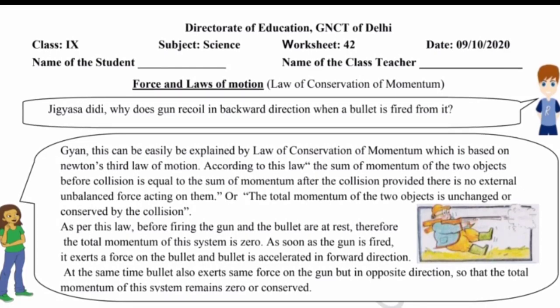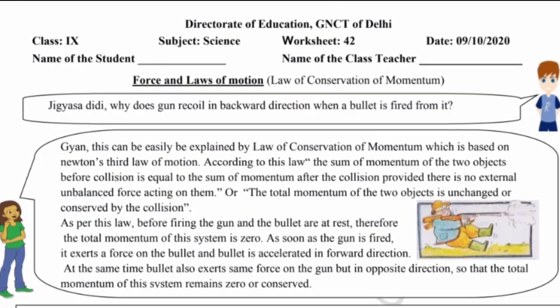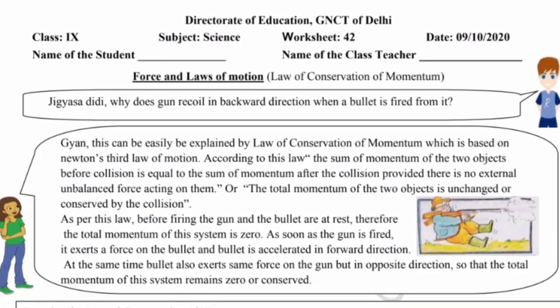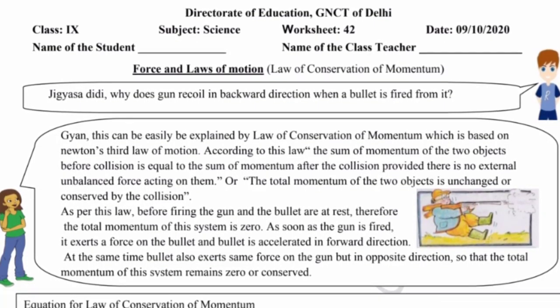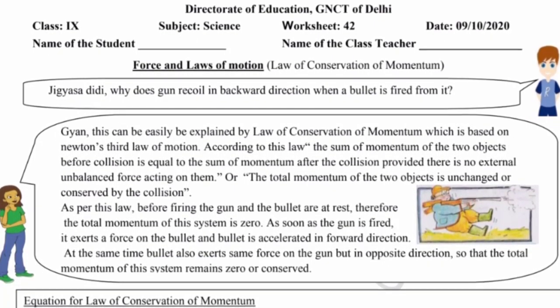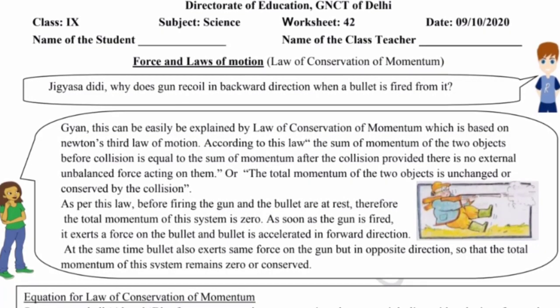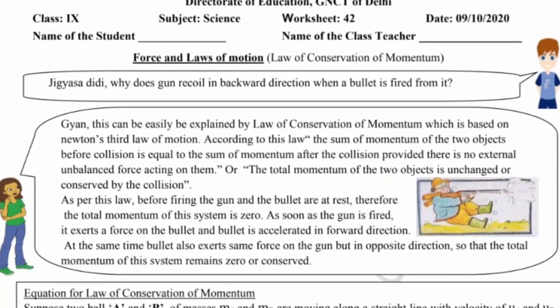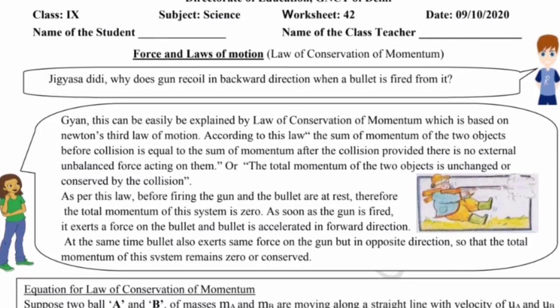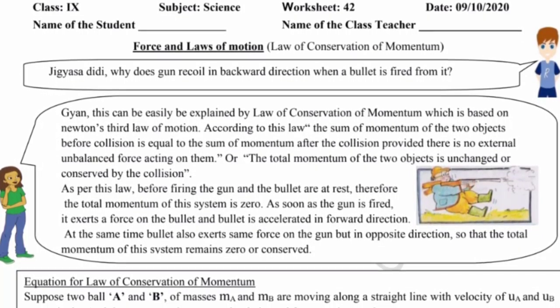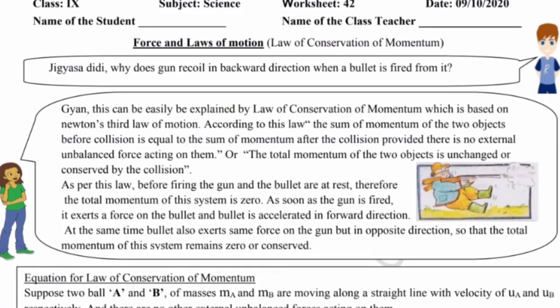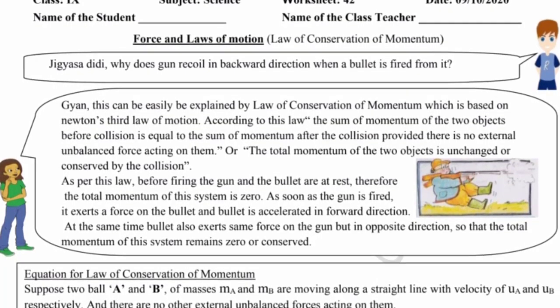Why does gun recoil in backward direction when a bullet is fired from it? This can be easily explained by law of conservation of momentum which is based on Newton's third law of motion. According to this law, the sum of momentum of two objects before collision is equal to sum of momentum after the collision provided there is no external unbalanced force acting on them.